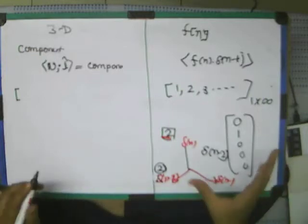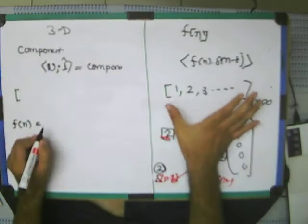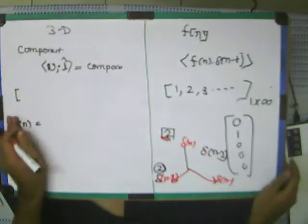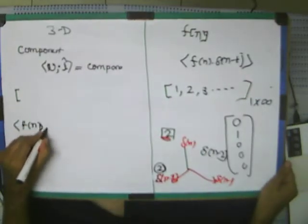The important point is that we can represent a function as a vector. See how we're representing it and doing dot product. What will be the dot product of f(n), g(n)?